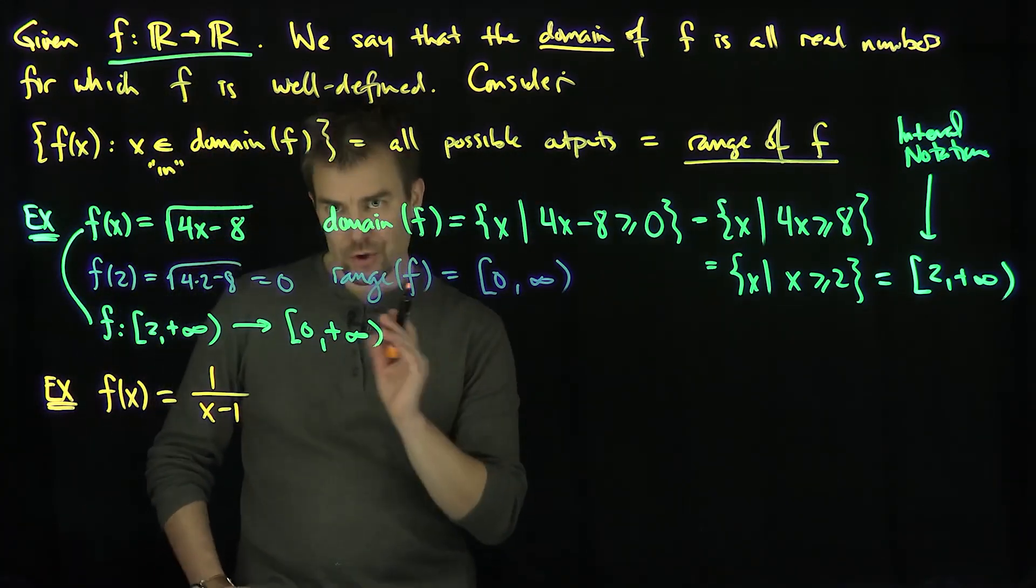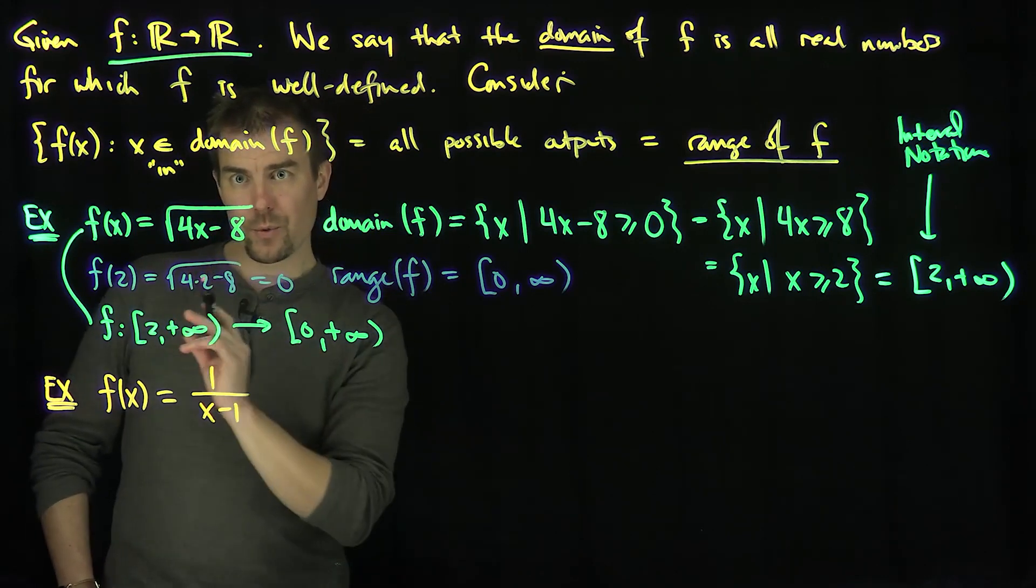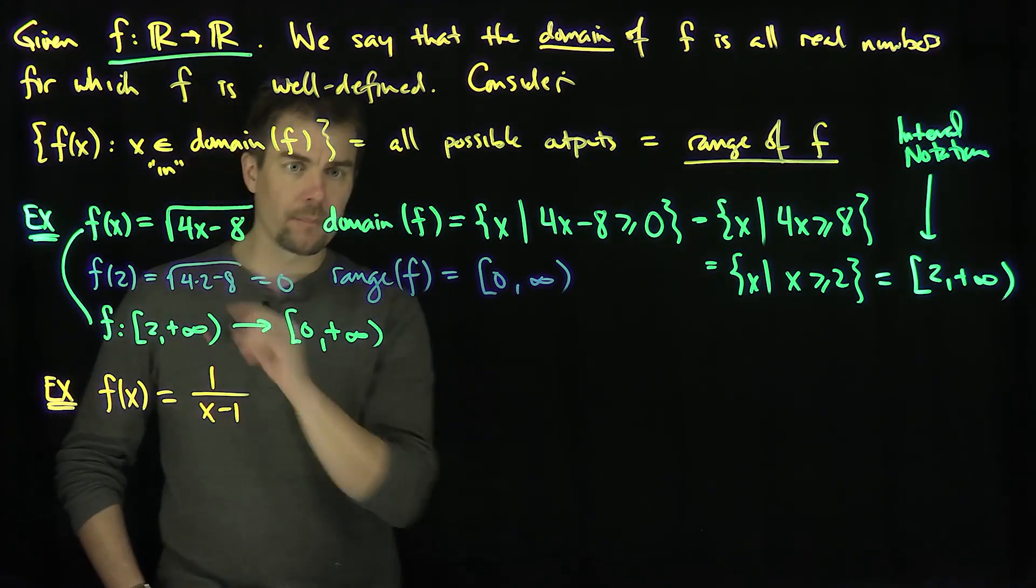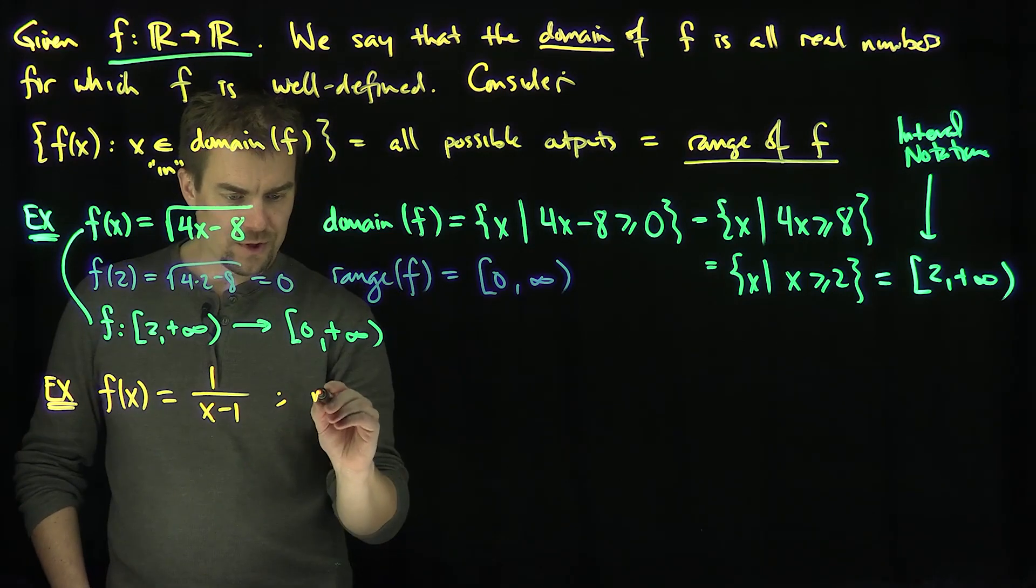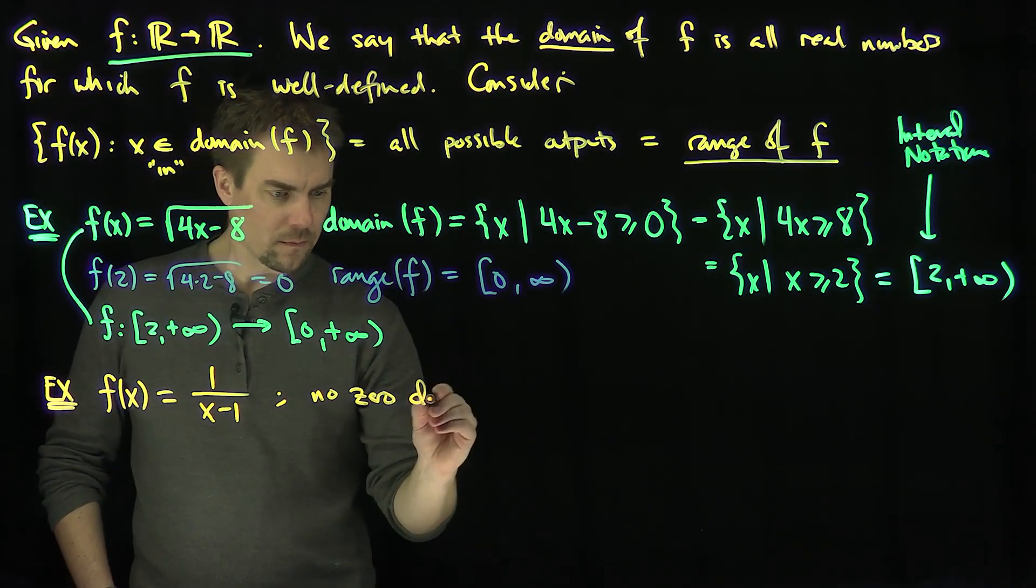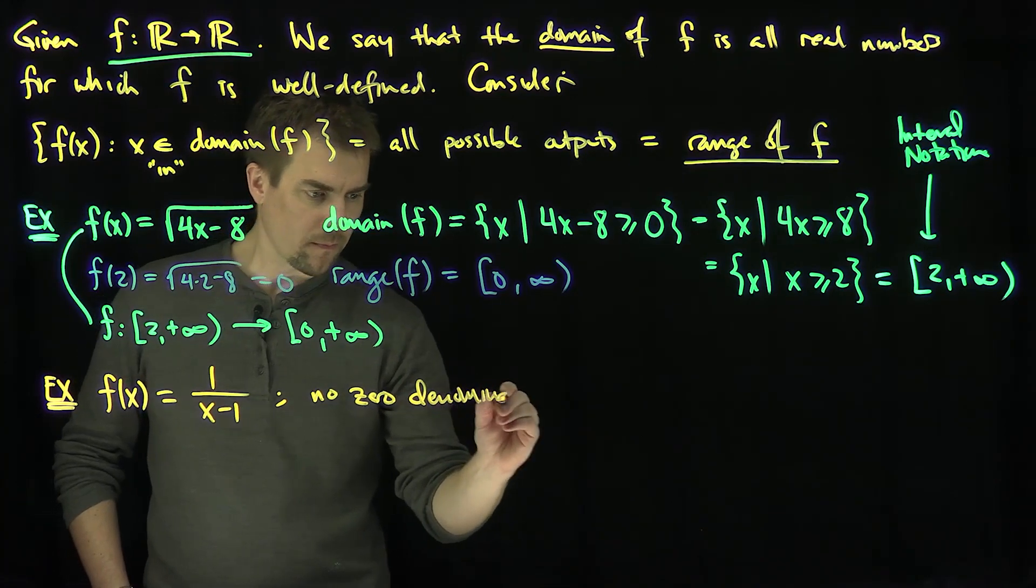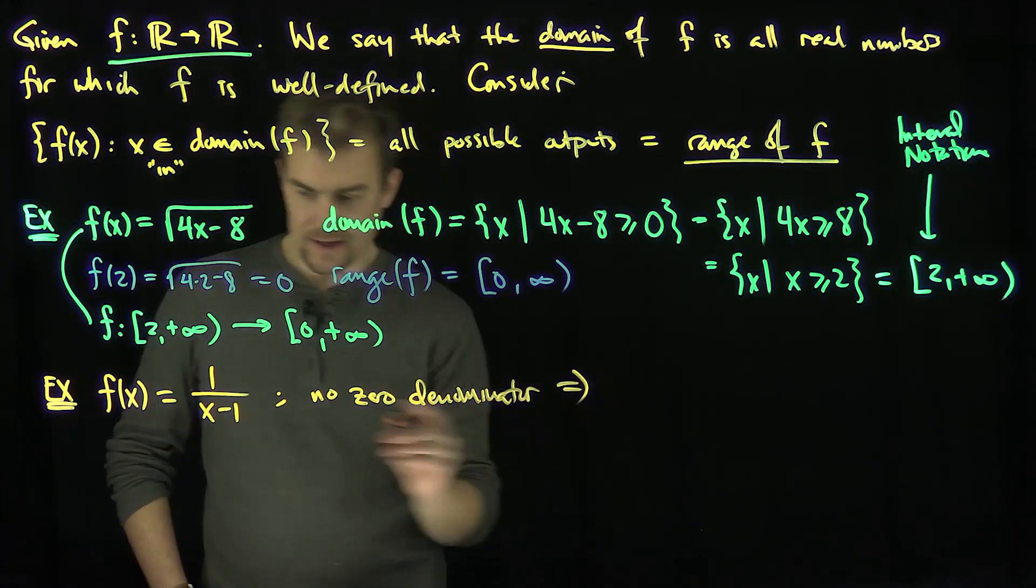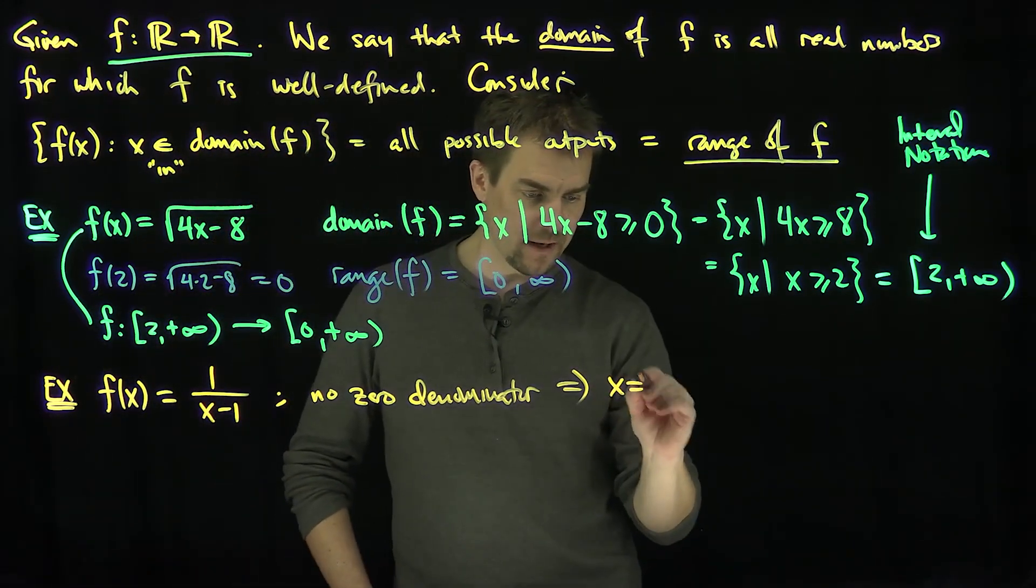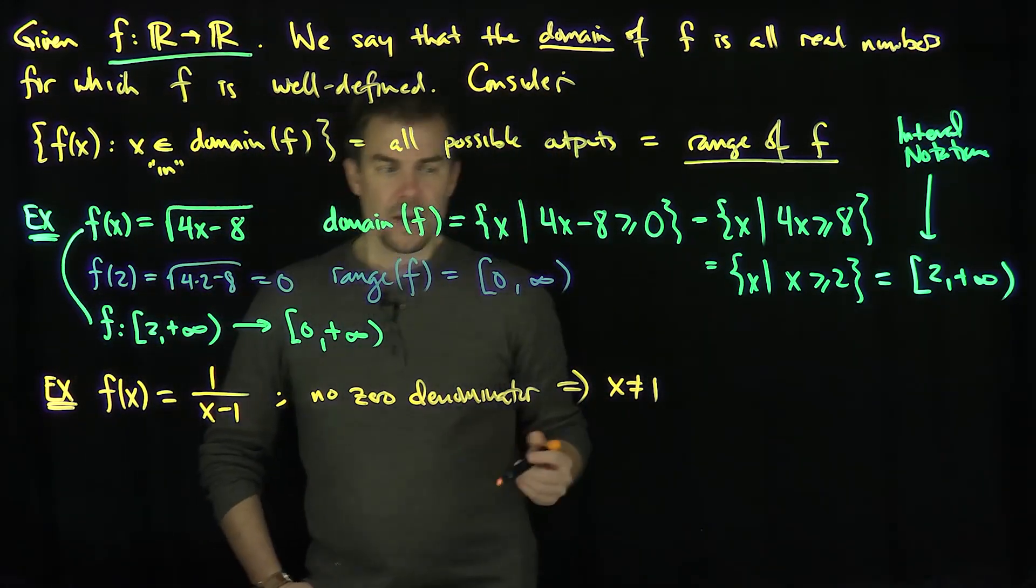Now we recall that there's a restriction. Just like there's a restriction for square roots, there's a restriction for denominators. We can never have a 0 in the denominator. So no 0s in the denominator implies that x cannot be equal to 1. It implies that x is not equal to 1.